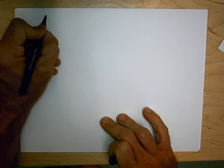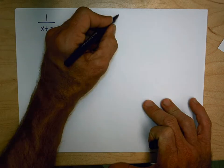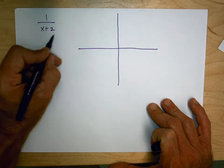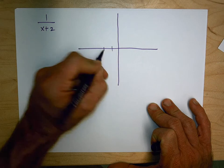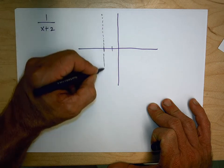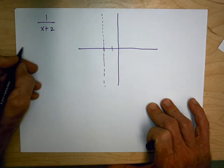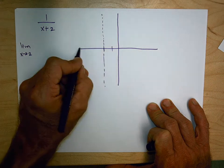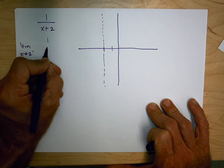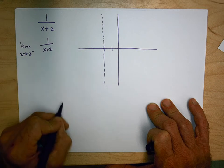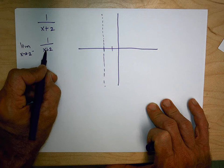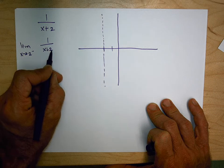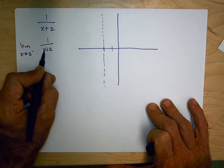Let's look at another example: 1 over (x plus 2). At x equals negative 2, because that's what makes the denominator 0, we will have a vertical asymptote. If we take the limit as x approaches negative 2 from the left of 1 over (x plus 2): putting in negative 3 gives negative 1, putting in negative 2.5 gives negative 2, and putting in negative 2.1 gives negative 10. So as we get closer and closer to negative 2, the function is decreasing very quickly.